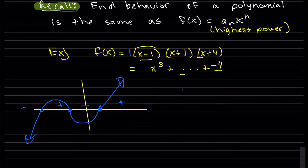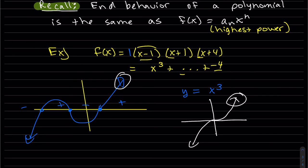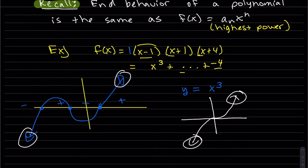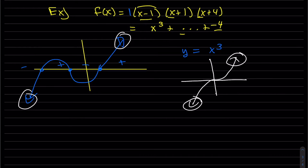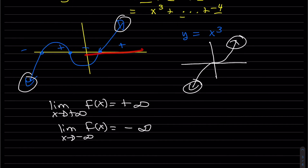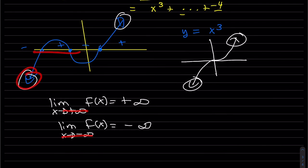Looking at the graph of x³, we only really care about the end behavior. The right behavior is positive infinity, and the left behavior is negative infinity. So as x goes to positive infinity the limit is positive infinity, and as x goes to negative infinity the limit is negative infinity.